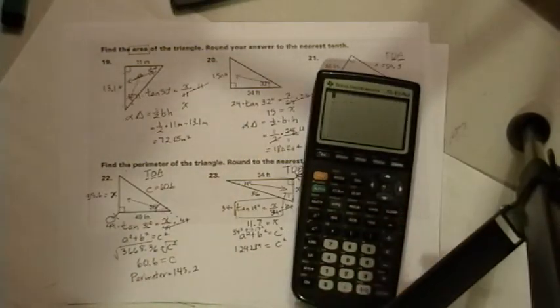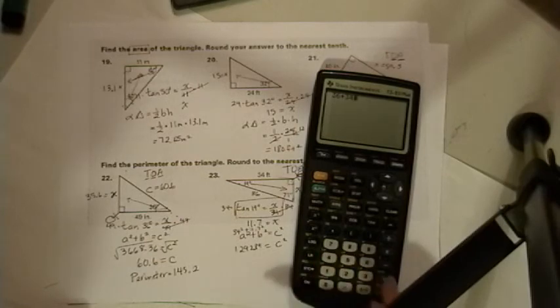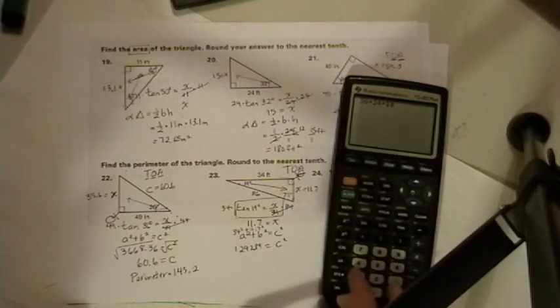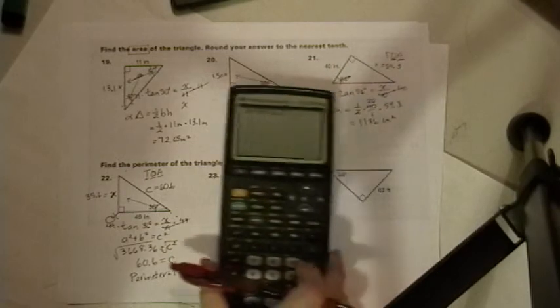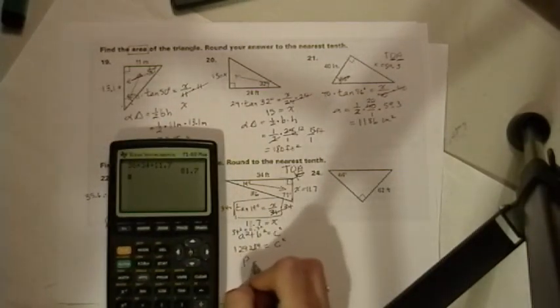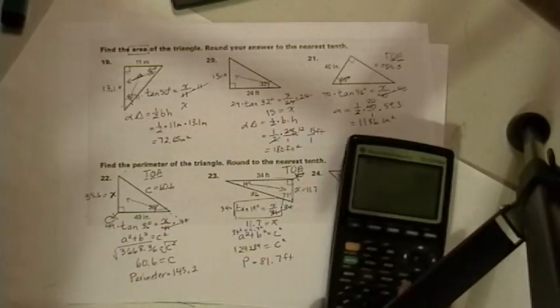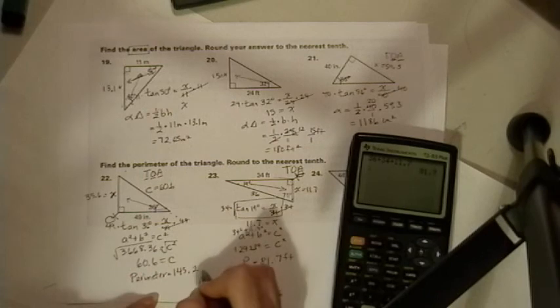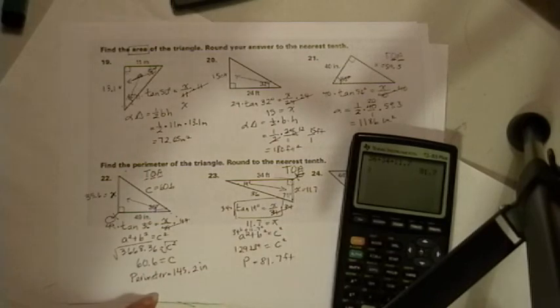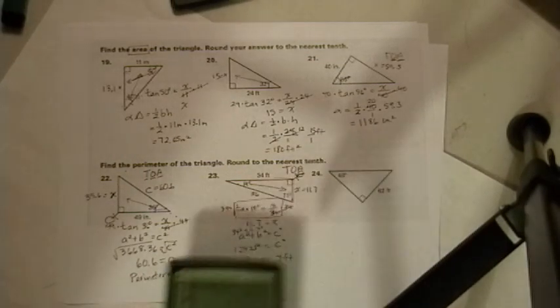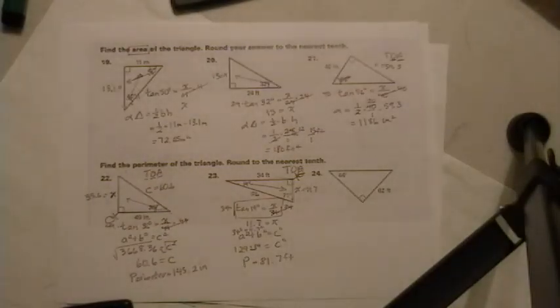So, we're going to clear our calculator at this point. And we're going to say 36 plus 34 plus 11.7. And it's 81.7. So, the perimeter is 81.7 feet. And I did not put down my units here. It was inches there. That concludes the lesson on perimeter.